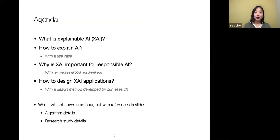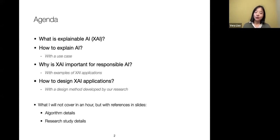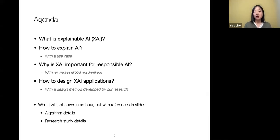I will start with talking about what is explainable AI, and then I will introduce some methods — talking about how to explain AI. My background is in human-computer interaction, so I will try to touch on both the algorithmic side and also the design side. I will also touch on why explainable AI is important, especially now when we talk about responsible AI and ethical AI, and how to design explainable AI applications.